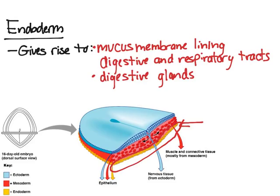That pretty much sums it up for the three embryonic tissues, the three primary germ layers. What you need to take away is that first tissues start to appear when the cells organize themselves into layers. The layers then become the ectoderm, which is the outer; the mesoderm, which is the middle; and the endoderm, which is the inner layer. They all give rise to different things. I hope this video helped you — if it did, please give it a like and share it with your friends.